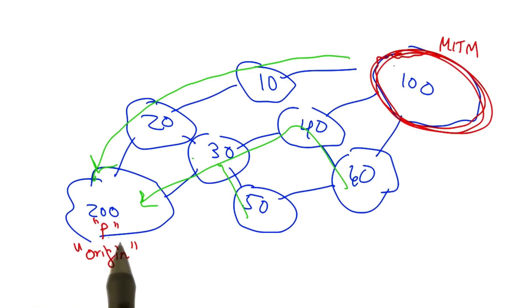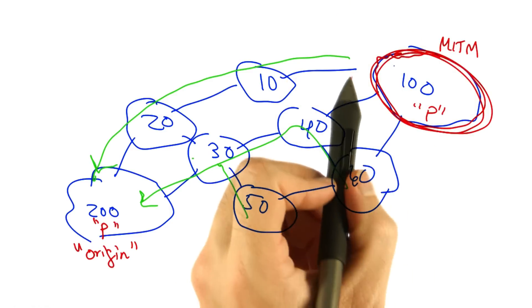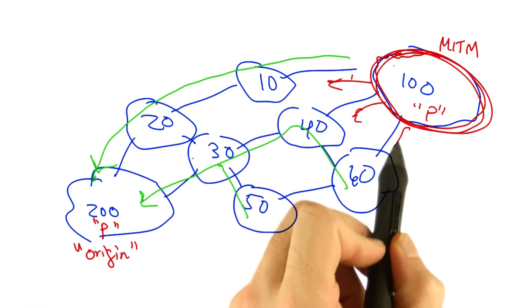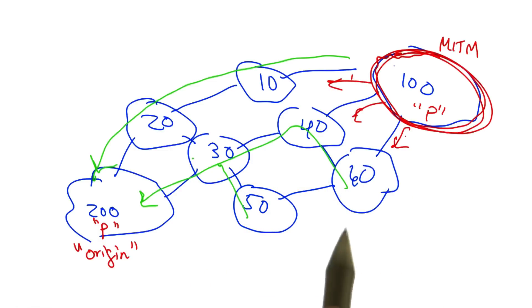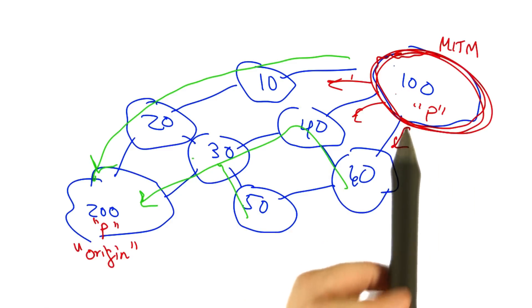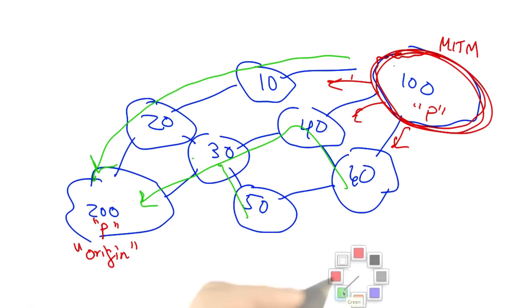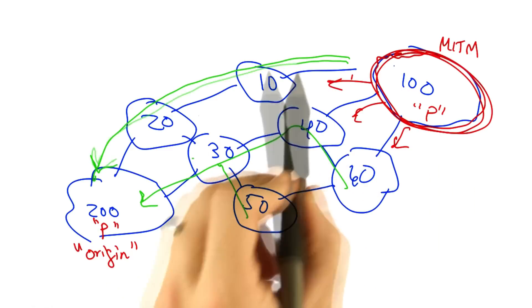If the original prefix being advertised was P, AS100 could also advertise the prefix P. But we want to make sure that AS100 maintains a path back to AS200. Now that path already exists, it's right here.